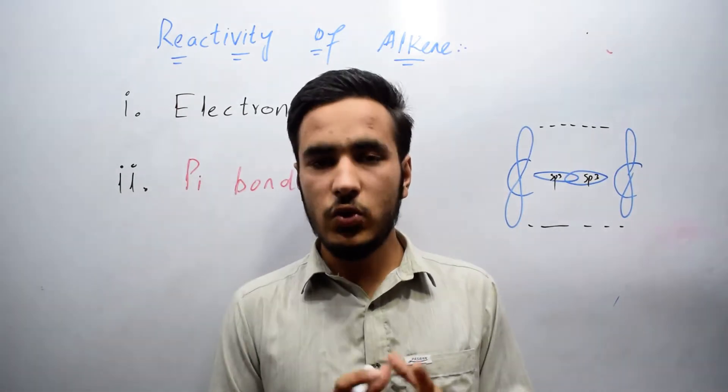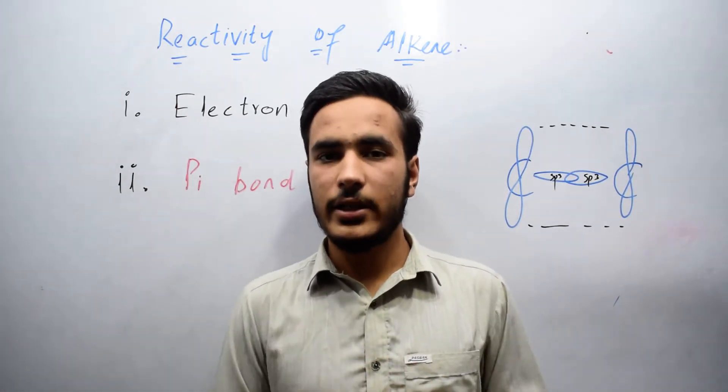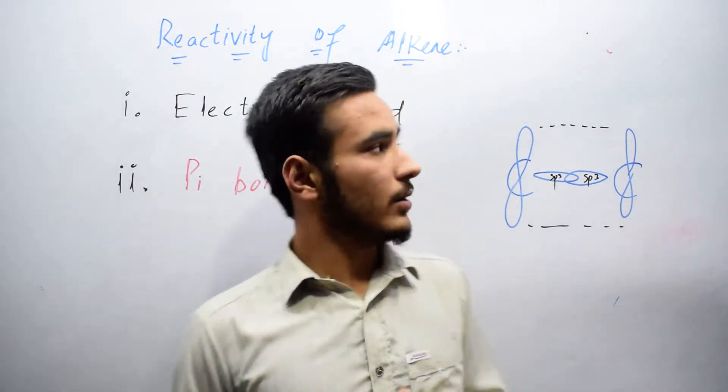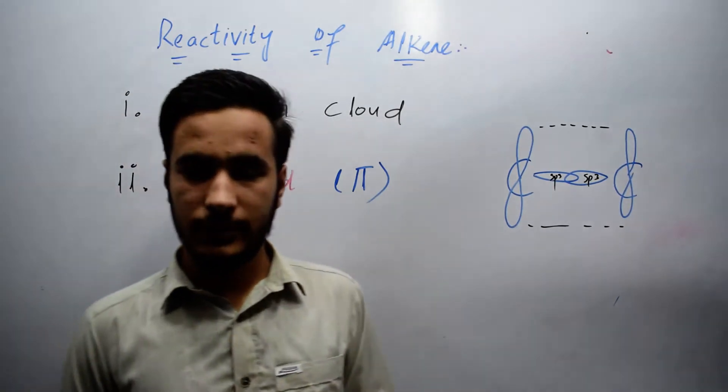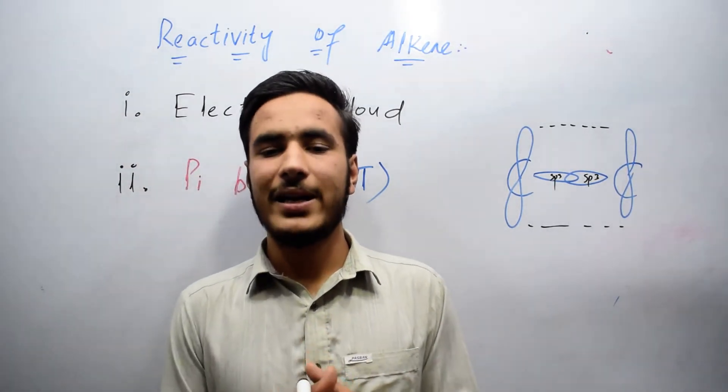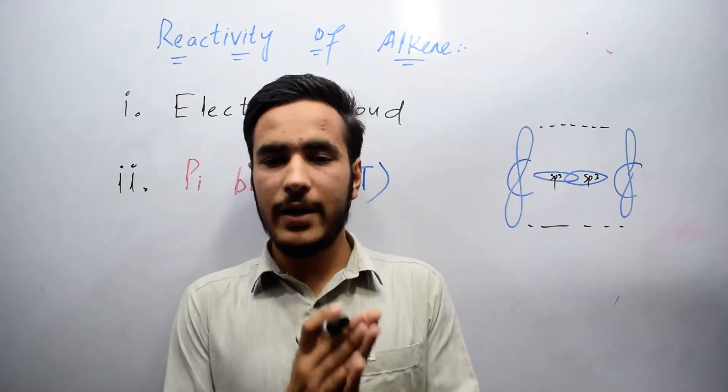Now we have two reasons why alkene is more reactive than alkane. The first reason is electron cloud. The electron cloud of the pi bond is present above and below the axis.